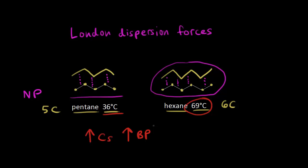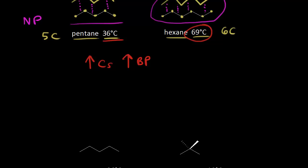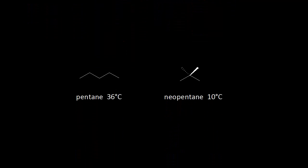This is an example comparing two molecules that have straight chains. Let's compare a straight chain to a branched hydrocarbon. On the left we have pentane again with a boiling point of 36 degrees C. Its molecular formula — five carbons and twelve hydrogens — is C5H12.